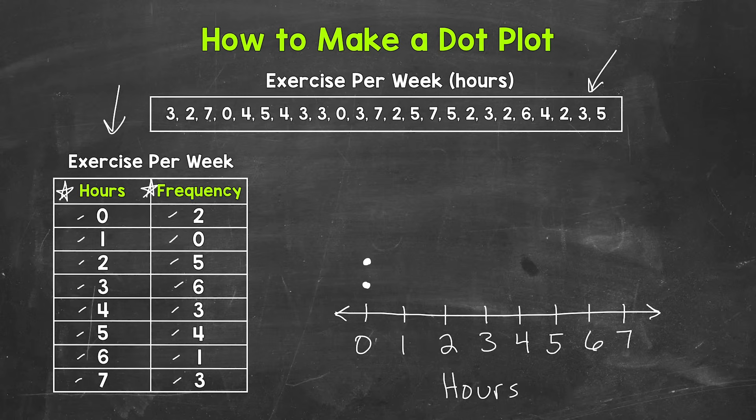Next, we have one hour. We have zero people for that, so we don't need any dots. Let's move on to two hours. We have five people for that, so let's put five dots above two. One, two, three, four, five.